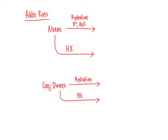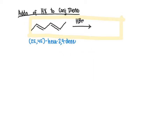Looking initially at the mechanism for the addition of halo acids as our example, the principles we'll look at for conjugated dienes — how their addition reactions differ from and are similar to those of alkenes — will focus on the mechanism for the addition of HX. You should also be able to adapt these principles to hydration reactions. Let's work through an example of adding an electrophile across the carbon-carbon double bond of a conjugated diene.